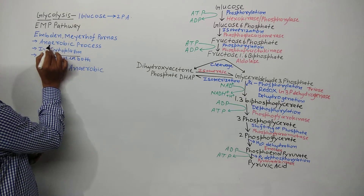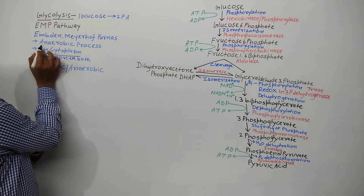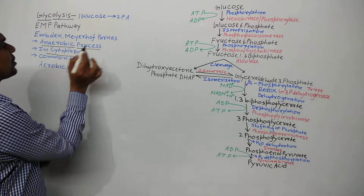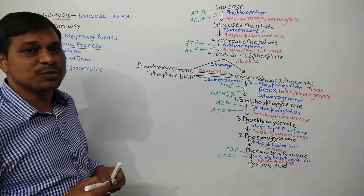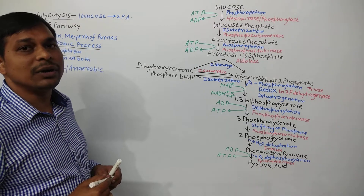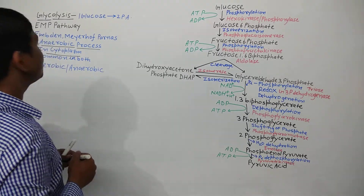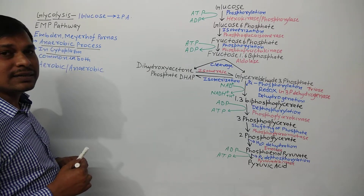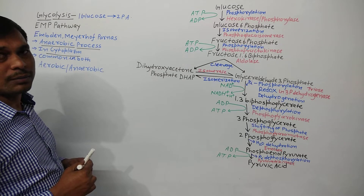The process of glycolysis is an oxygen-independent process, meaning it occurs in the absence of oxygen, without the involvement of oxygen. So glycolysis is an anaerobic process.